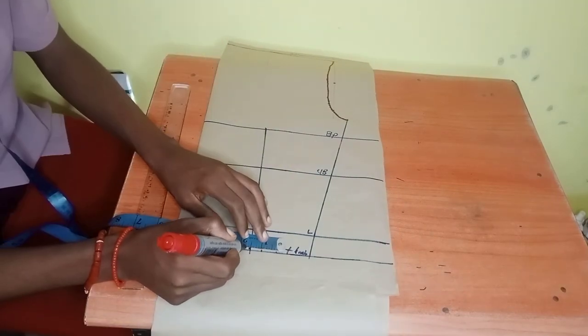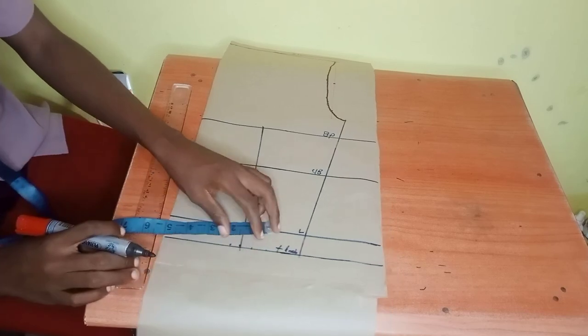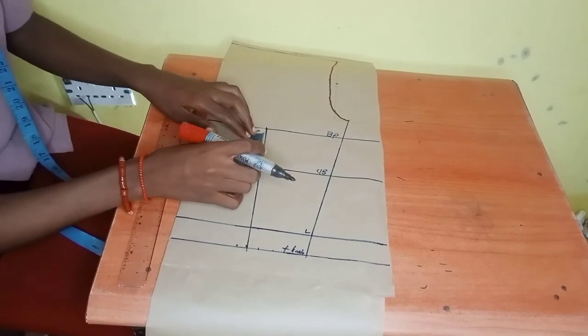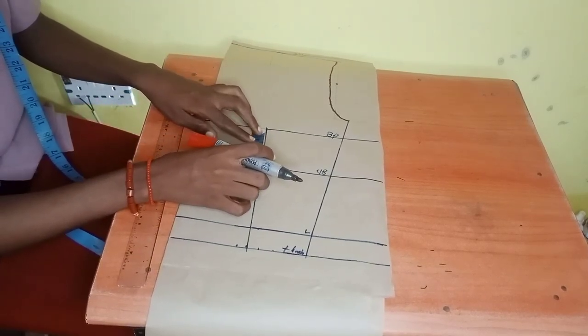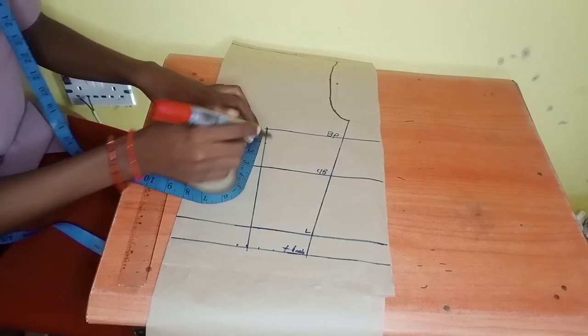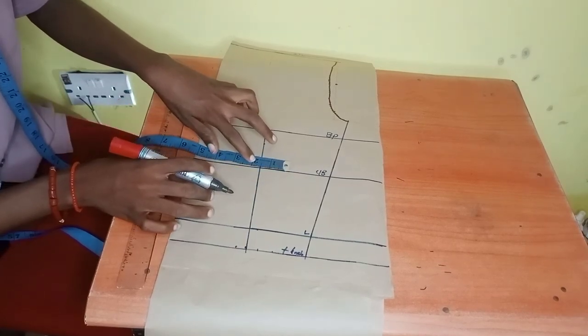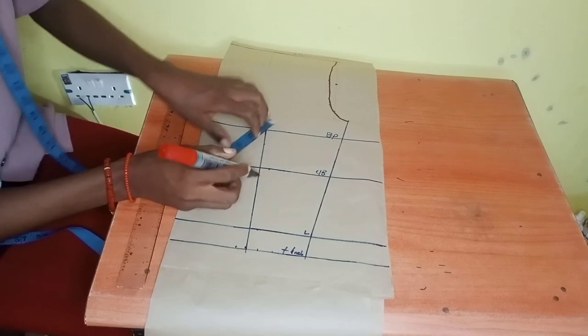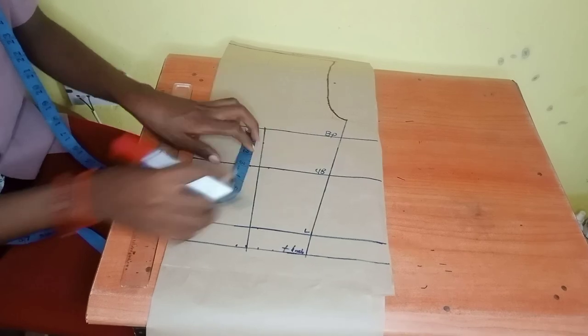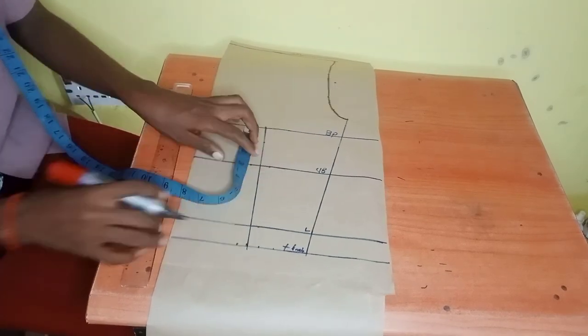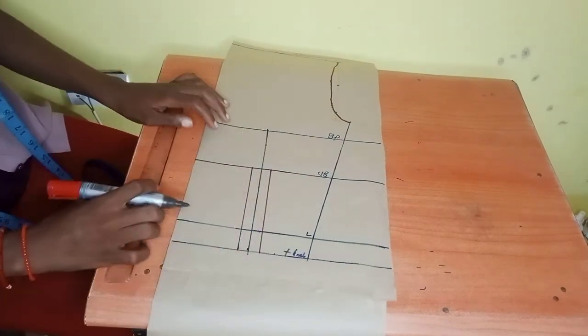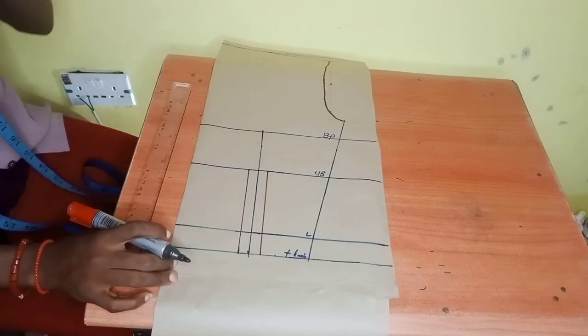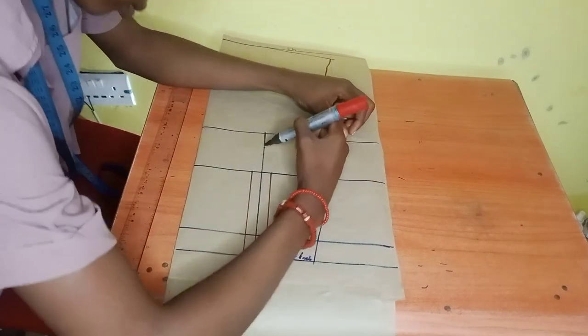The next thing is for you to go ahead and create your dart measurement, which is your nipple to nipple measurement divided by two. After creating a dart measurement like that, take your dart's mark, the number of dart's mark you use. For me I'm using half an inch, then go ahead and create your dart's mark. Go down by one inch from your bust point.